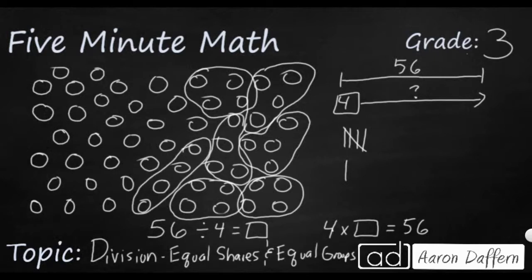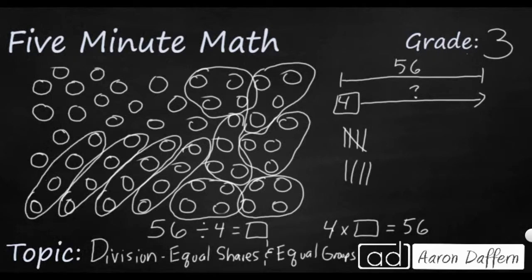As long as you are getting groups of four, you could either circle them, you could cross them out, anything to where if you make a mistake for whatever reason, you haven't destroyed it so much that you can't see your circles. You don't want to draw over it so much, and you realize you've got an extra circle, and you're missing a circle, and then you can't see anything underneath.